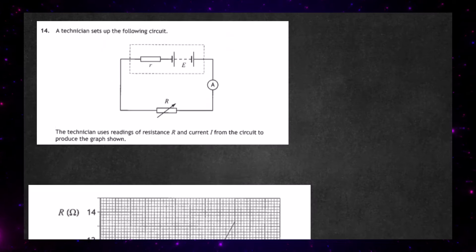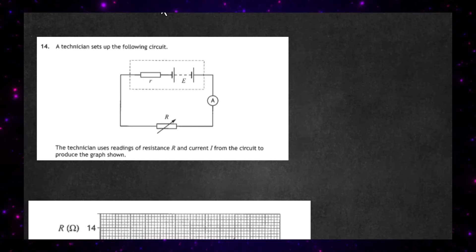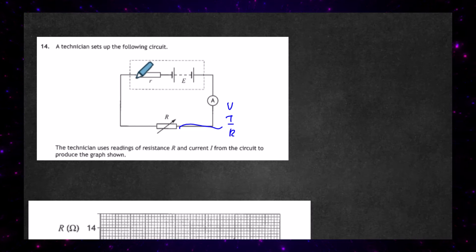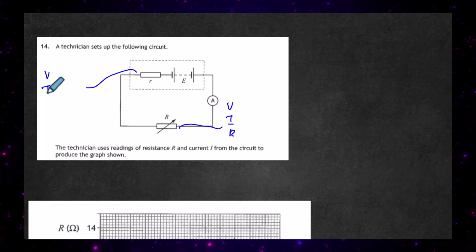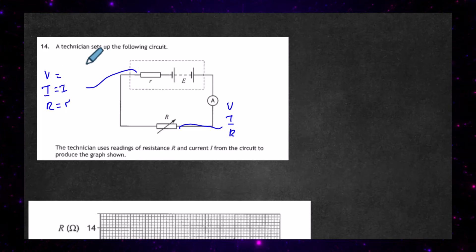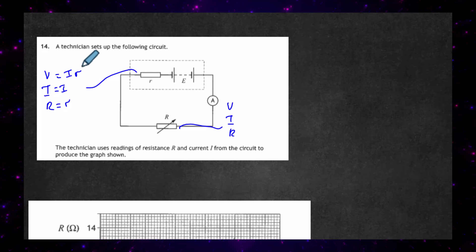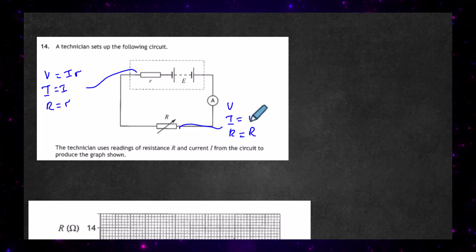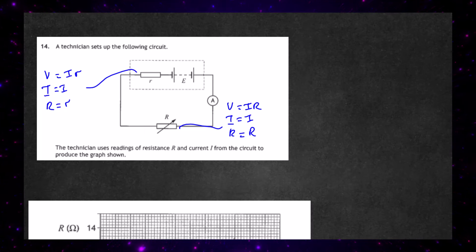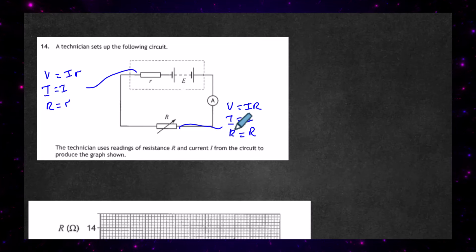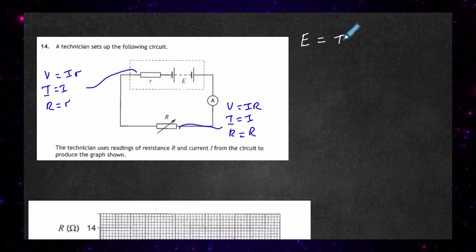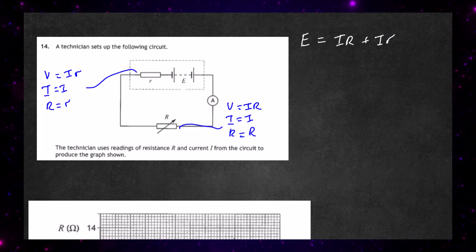Let's go back to the original circuit to see where the energy considerations come from. In a circuit like this, we can look at each component and apply V, I and R to determine the potential difference across it. The resistance for the internal resistance is small r, the current through it is I, and therefore the potential difference dropped across it is I times small r. Likewise, the external resistance is R, the current is I, and the potential difference dropped is I times R. The EMF E must equal the sum of these two potential differences: E equals I times R plus I times r.